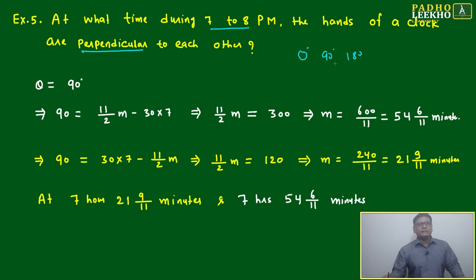Apart from that, any angle can be asked, but other than 0 and 180, if any angle is given, always you will get two values - keep that in mind. Other than 0 and 180, always you will get two values. Theta equal to 90, so 90 equal to 11/2 minus...